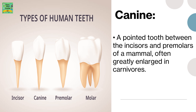Types of human teeth: incisor, canine, premolar, molar. A pointed tooth between the incisors and premolar of a mammal, often greatly enlarged in carnivores.